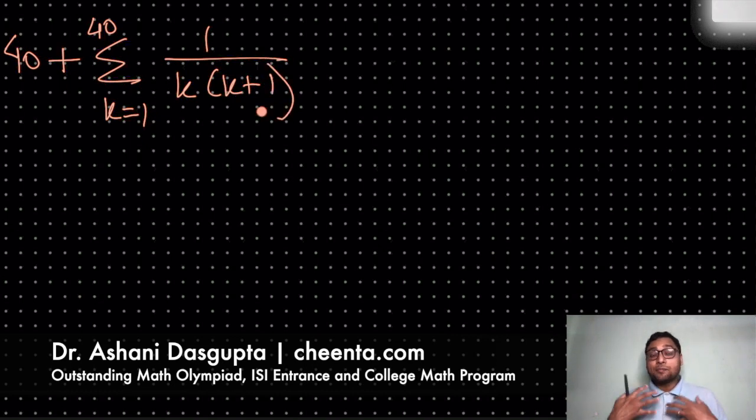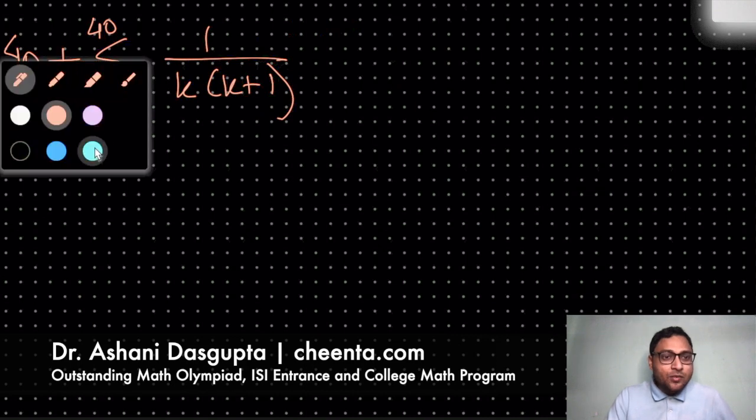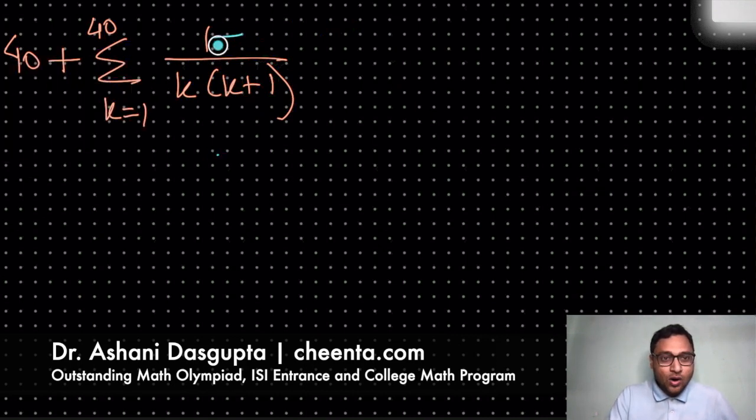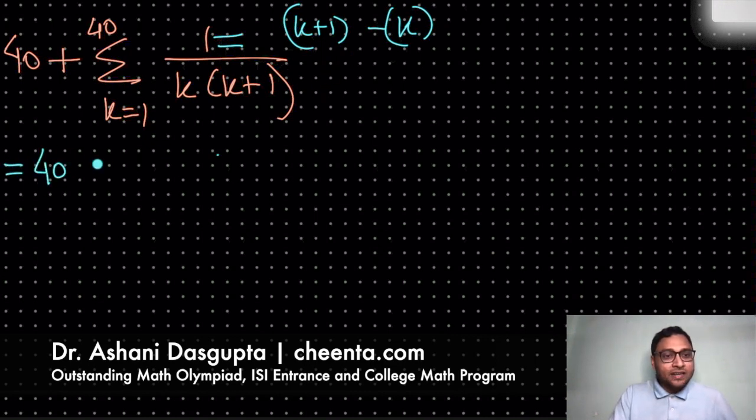Now the telescoping method will kick in. What we will do is we will write the numerator, this 1, as (k+1) minus k. It's very simple because (k+1) minus k is of course 1. So what you get is 40 plus summation of k equal to 1 to 40,